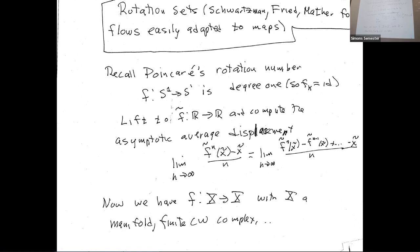To remind you, the classical rotation set: you have a degree-one map of the circle, lift to the universal cover, and compute the asymptotic average displacement. You go off to infinity at most linearly, average it out, and get a number. If the map is non-injective, the limit may not exist, but you focus on where it does. We want to generalize this to surfaces.